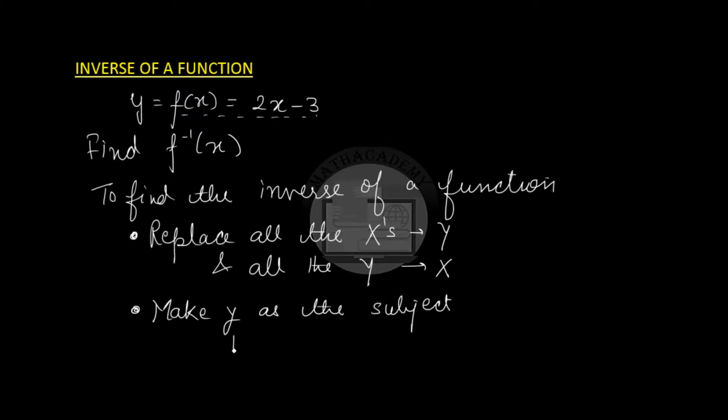So let us try to find the inverse of y equals 2x minus 3 using these steps. y equals 2x minus 3. The first step is replace x by y and y by x, so here y becomes x and x becomes y.